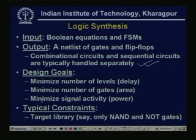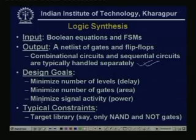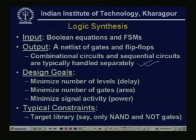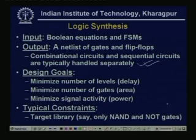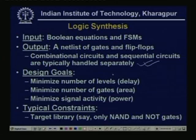What are the design goals? Minimize number of levels — that is delay. Minimize number of gates — that is area. Minimize signal activity — that is power. That is why we always say to reduce delay, area, and power — these are the three parameters for an efficient design. The typical constraints are the target library — for example only NAND gates. What gates are available is called the library, and that is the constraint. If all types of gates are available we may get a very good optimized design structure that reduces all three.